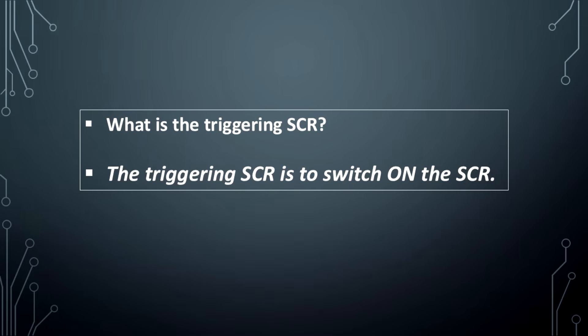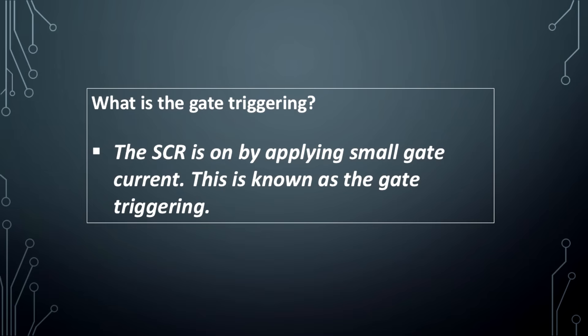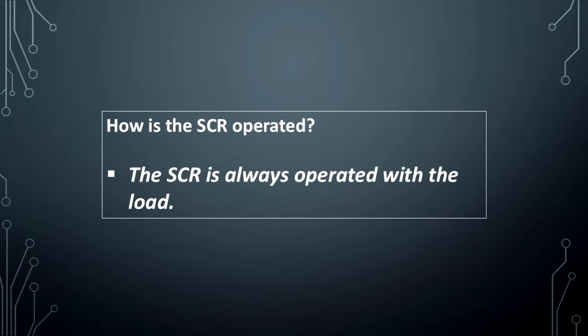What is triggering of the SCR? Triggering the SCR means to switch on the SCR. When is the SCR on? The SCR is on if the voltage across it exceeds the rated forward breakover voltage. What is gate triggering? The SCR is turned on by applying a small gate voltage. This is known as gate triggering.